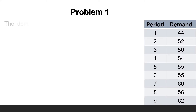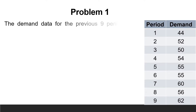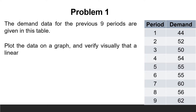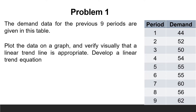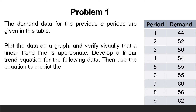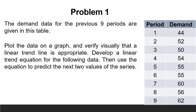The first problem: the demand data for the previous nine periods are given in this table. Plot the data on a graph and verify visually that a linear trend line is appropriate. Develop a linear trend equation for the following data, then use the equation to predict the next two values of the series. Let us start solving by plotting the data. From the graph it is clear that the data are increasing with a linear trend.